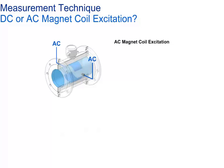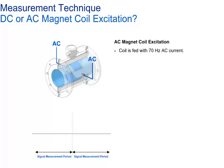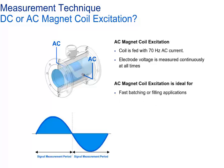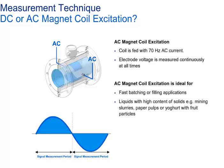The AC field excitation operates at a much higher excitation frequency than the pulsed DC field. The flow signal is integrated continuously. As a result of the higher excitation frequency, noise signals, e.g. due to multiphase fluids, are minimized. This excitation provides a faster response time of the flow meter system. Therefore, it is the preferred version for especially short batch cycles in fill applications. It is most applicable for fluids with high content of solids, two-phase liquids, liquids with low conductivity, or pulsating flows produced by piston pumps.